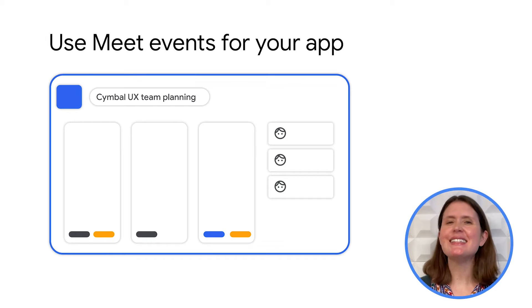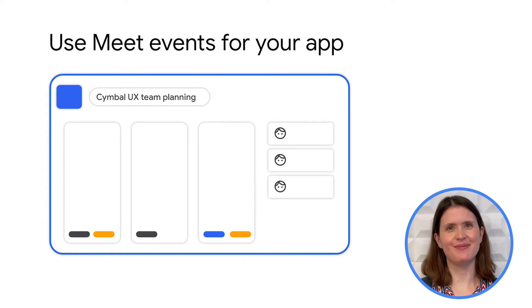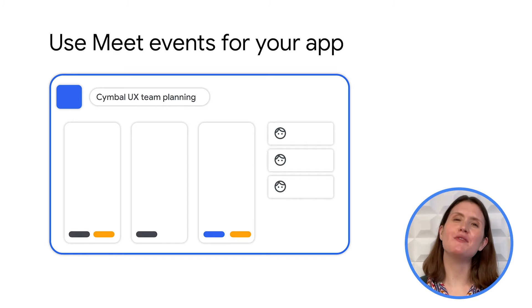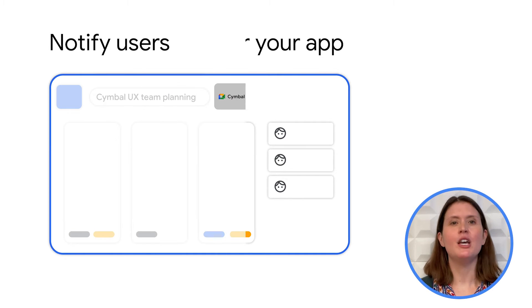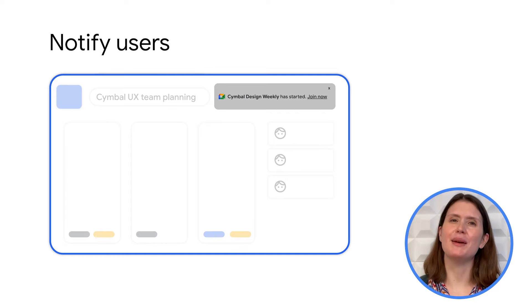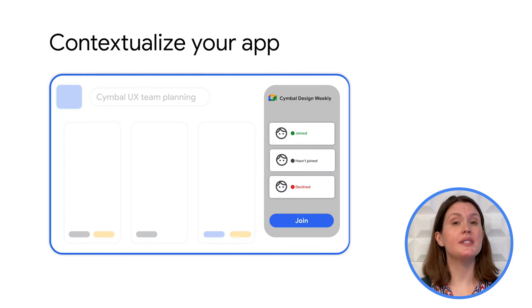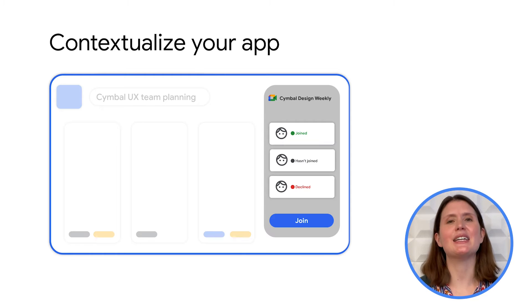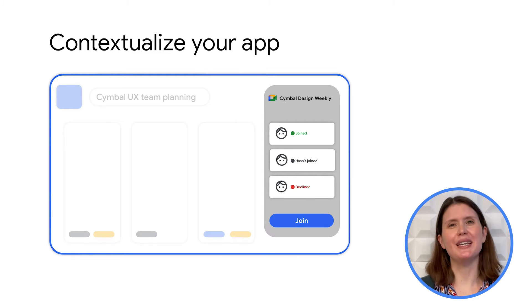Next, I'd like to show you just a few ways that your app can use Meet events. Let's say you've built an app that helps teams manage their projects. Your app can use events to notify project members when their weekly call is started in Meet and prompt them to join, or change and contextualize the project view based on what's happening in an active conference, such as when team members join or leave.